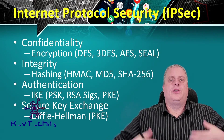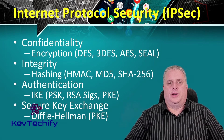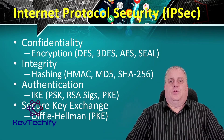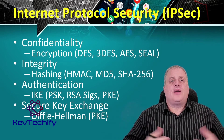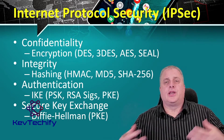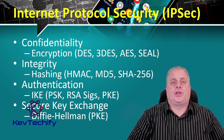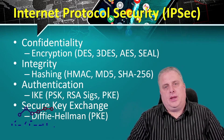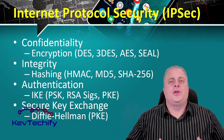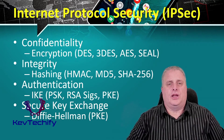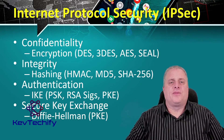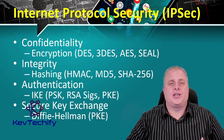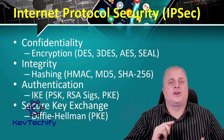The great thing about Internet Protocol Security, also known as IPsec, is that it secures data at the network layer, whereas a lot of other security mechanisms secure data at the application layer. In this aspect, it's truly a network security mechanism, securing end-to-end communications across the network. IPsec involves four elements: confidentiality, integrity, authentication, and a secure key exchange.